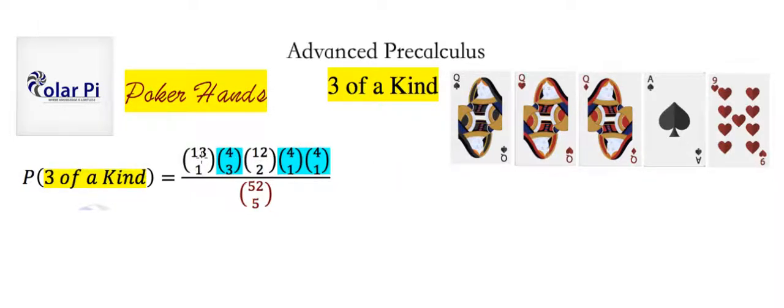Now, since you've used up one of the 13 for your queen here, you don't have 13 to choose the last two cards, the other two cards, the remaining two cards. You have 12 to choose from and of course from 12 you want to choose two.